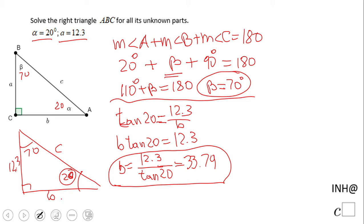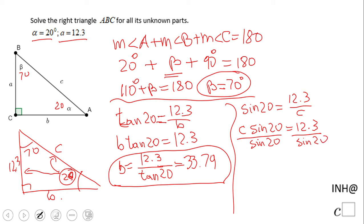We have one more thing to find: side c. Again, I'm going to use this angle of 20. We have opposite and hypotenuse, which tells us we need to use sine. Sine of 20 equals 12.3 over c. Cross multiply: c sine of 20 equals 12.3. Divide by sine of 20 on both sides, and c equals 12.3 over sine of 20.